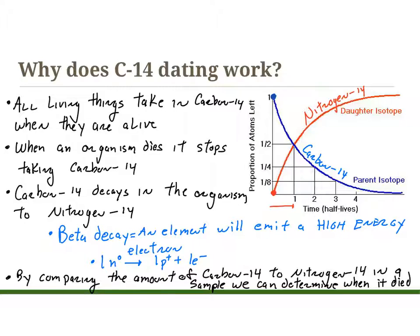Why does carbon-14 work? All living things take in carbon-14 while alive — through food and the plants and animals they eat. After the organism dies, it stops taking in carbon-14, and the carbon in that organism starts to decay. Carbon-14 decays to nitrogen-14, and since the mass number stays the same but the element changes, this is an example of beta decay.